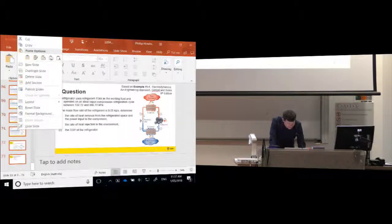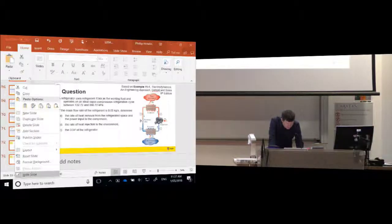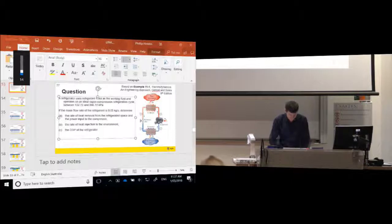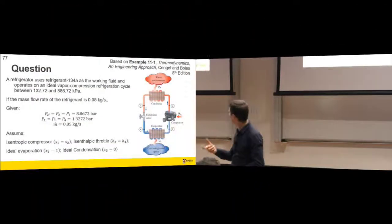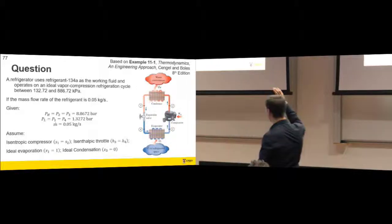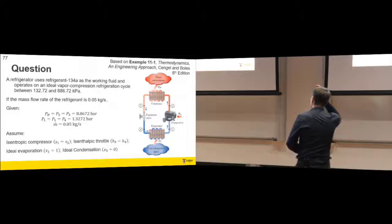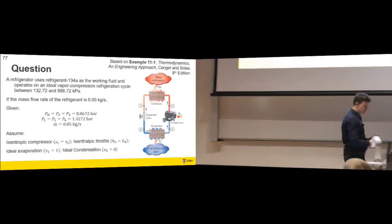For this one I'll show the calculations rather than do them live, because doing the calculations takes a while as we've seen. I'll show you what analyzing one of these systems looks like - it's the same thing as analyzing the Rankine cycle. A refrigerator uses a working fluid, it's got some pressures and a flow rate. We know that P2 and P3 must be the high pressure based on this cycle.